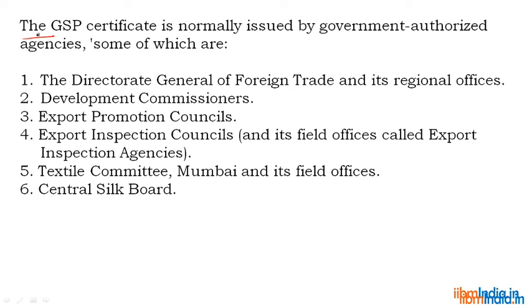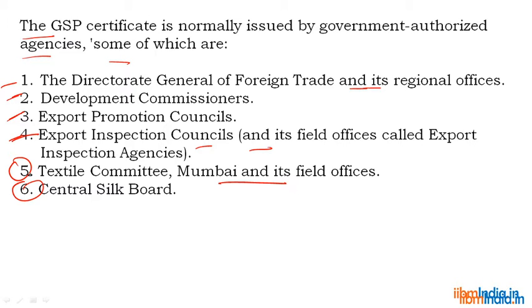The GSP certificate is normally issued by government-authorized agencies, which include: the Director General of Foreign Trade (DGFT) and its regional offices, Development Commissioners, Export Promotion Councils (EPCs), Export Inspection Councils and its field offices called Export Inspection Agencies, the Textile Committee in Mumbai and its field offices, and the Central Silk Board. These are the six main government-authorized agencies that issue the GSP certificate.